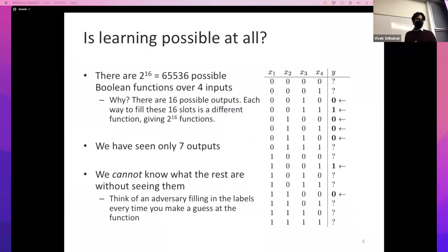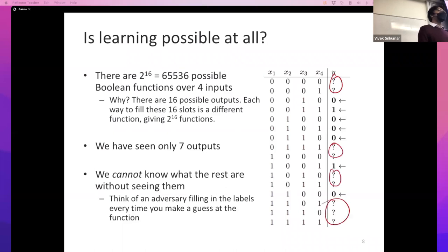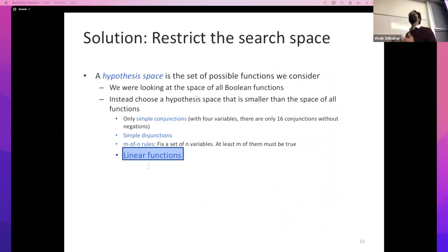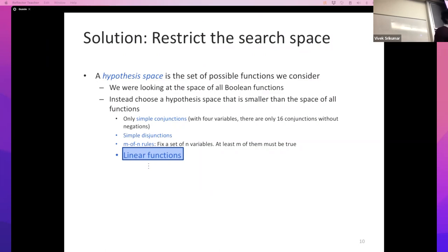A few lectures back I showed a slide and said maybe learning is not possible at all, because we cannot know what goes in the question marks without seeing all the data. The answer was: the only way we can learn something is if we make some assumptions. If we do not search over every possible function and instead restrict our search space - restrict ourselves to certain classes of functions - instead of looking at all possible boolean functions, we have to either explicitly or implicitly, like the ID3 algorithm does, restrict our search space.